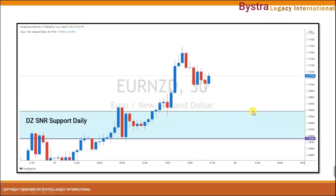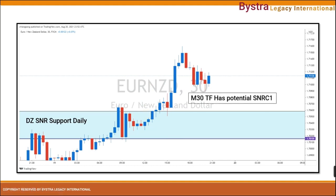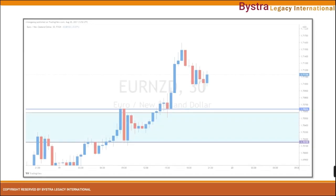So we go to the M30 time frame. After there's a confirmation of rejection from the zone — especially with the bullish engulfing that clearly breaks the danger zone SNR on the daily time frame — we need to look for a setup. In the M30 time frame, we can see there's a setup. It will be the SNRC1 setup.